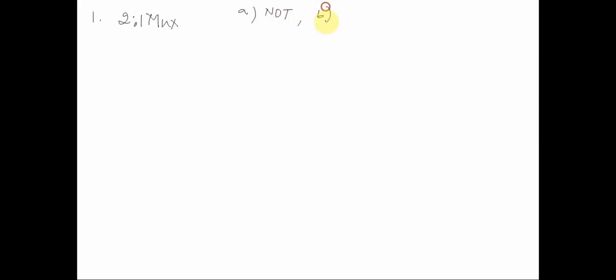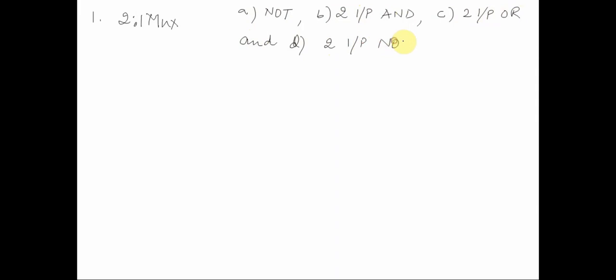Basically we have to implement a NOT gate, a 2-input AND gate, a 2-input OR gate, and a 2-input NOR gate using a 2-to-1 multiplexer. Let's get started. First, let's recall what is the structure of a MUX.